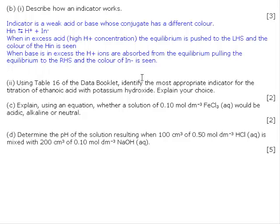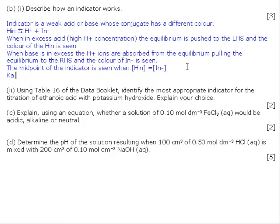The midpoint of the indicator is seen when the HIn concentration is equal to the In- concentration. If we put this fact into the weak acid equilibrium, we have H+ times In- over HIn. We should be able to see that when HIn equals In-, then Ka equals H+.